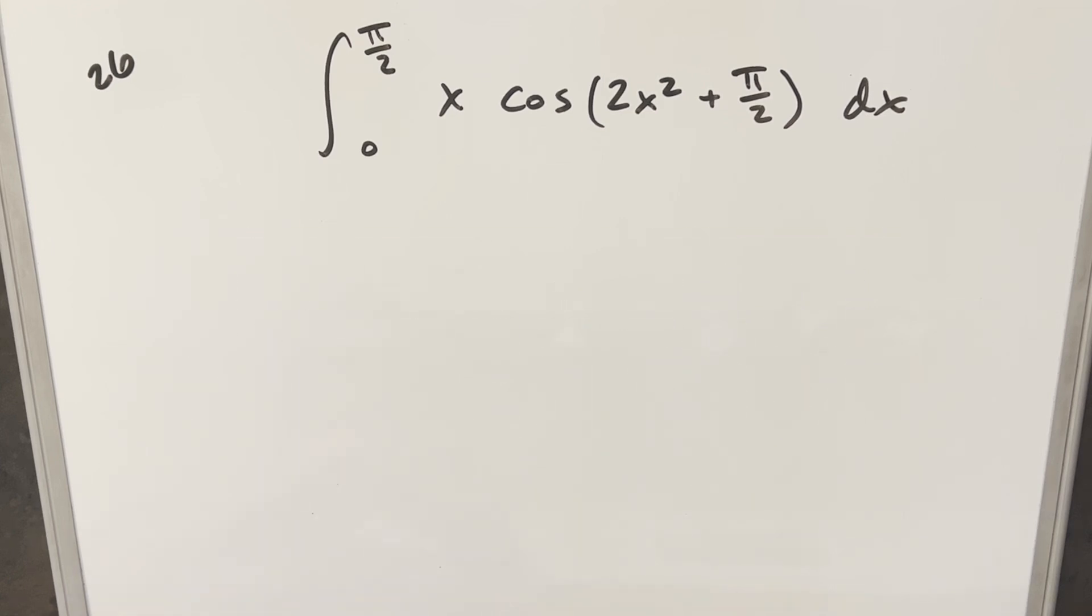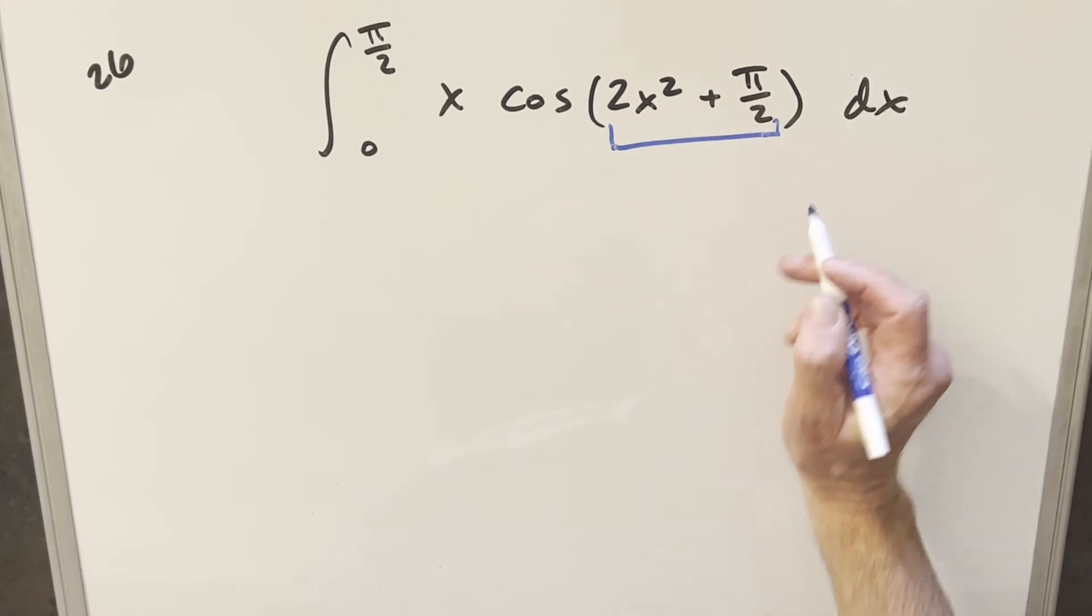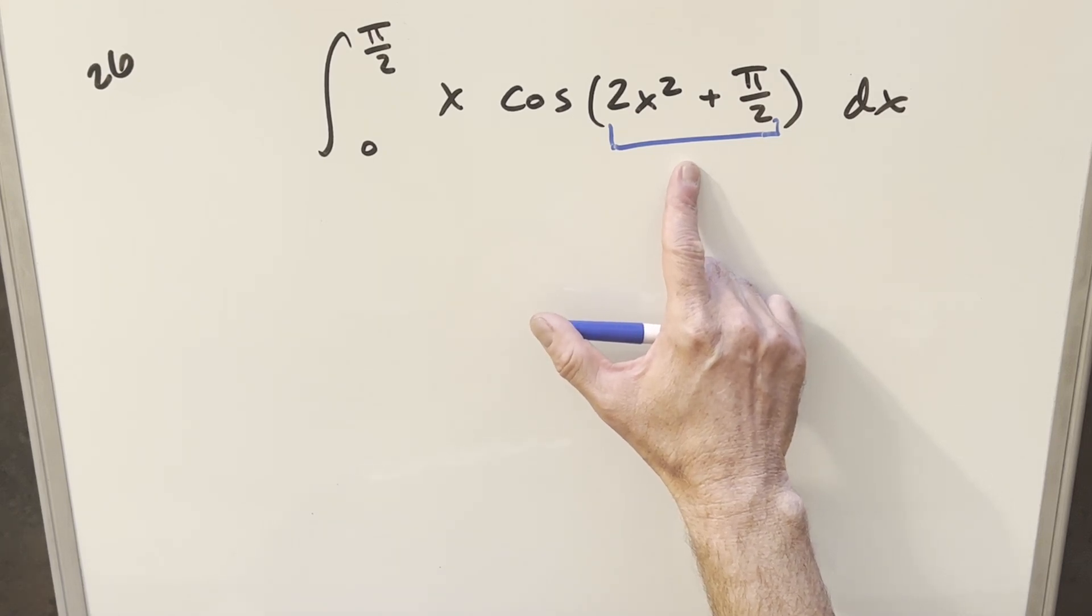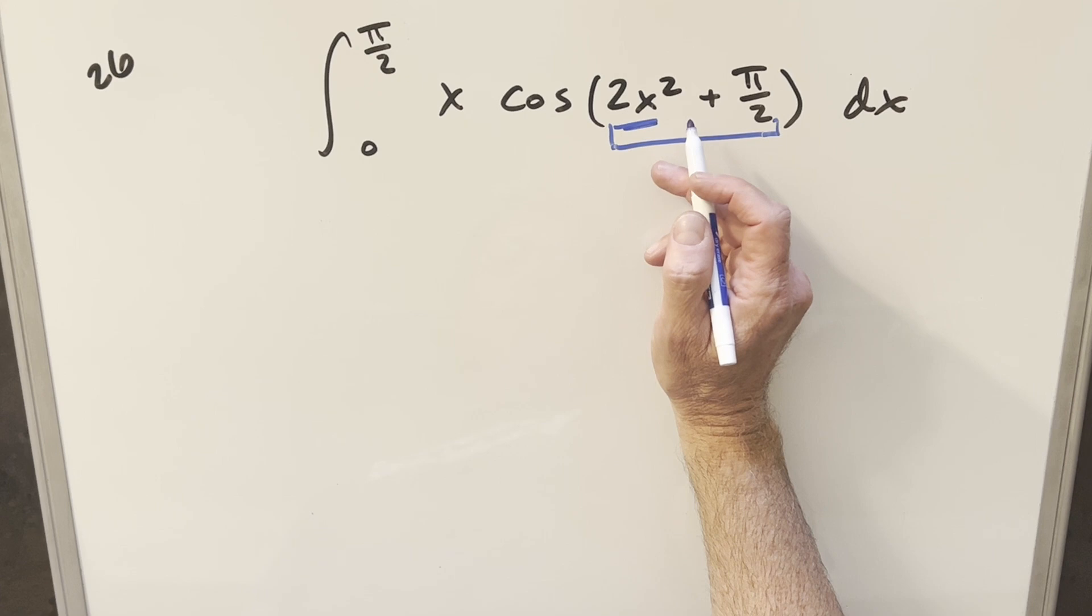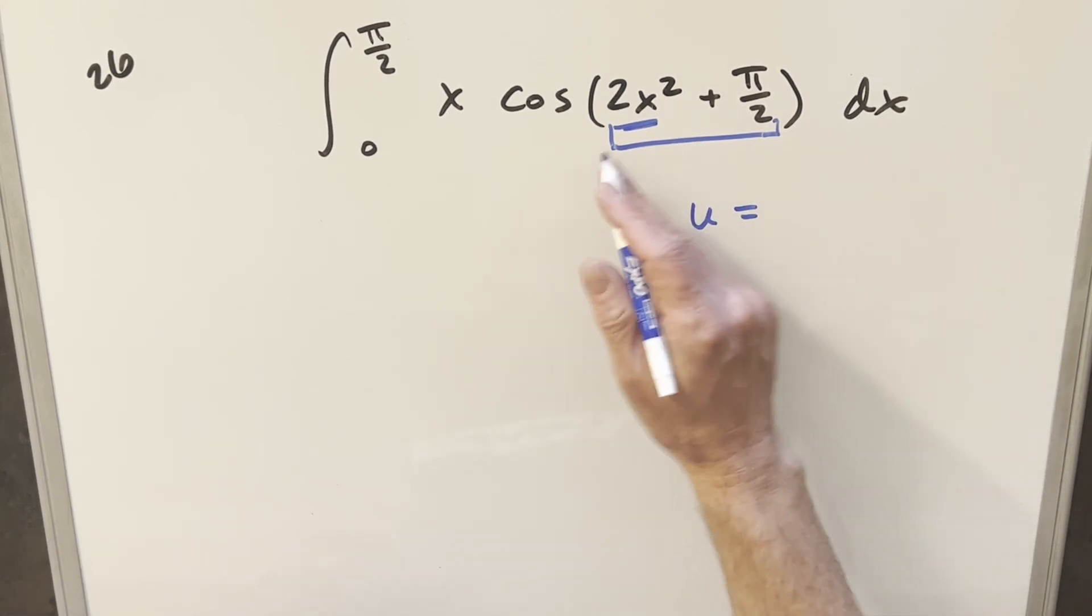Okay, to get started with this, the first thing, really the only thing we need to deal with is everything going on inside the cosine here. Now there's a few ways we could do it. We could actually use the different angle formula on this to simplify it, but even if we do that, we'll still have something squared, so we're going to need to do a u substitution either way. So let's just do a u substitution for all this stuff.